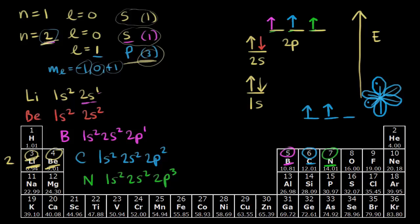Moving on to oxygen, which has eight total electrons. So far we have one s two, two s two — that's four electrons. We need four more. Now that all of the p orbitals are occupied, we can start to pair our spins. Oxygen's eighth electron pairs up in one of the p orbitals. We write two p four, giving a full configuration of one s two, two s two, two p four. Adding two plus two plus four equals eight — the total number of electrons for oxygen.